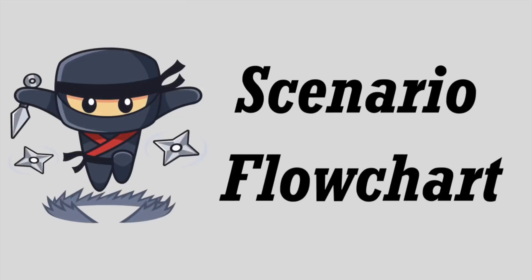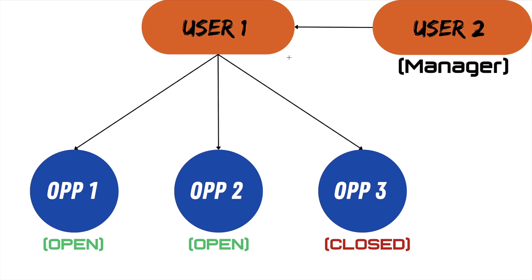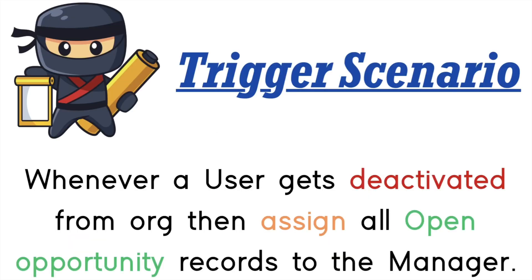Let me explain it using a flow diagram. Let's say there are two users in our org — user1 and user2. User2 is the manager of user1, and on user1 there are multiple opportunity records: OPP1 and OPP2 are open opportunities, and OPP3 is a closed opportunity. Whenever user1 gets reactivated, we need to assign user2 — the manager of user1 — as the owner of OPP1 and OPP2, but not OPP3 because it is a closed opportunity.